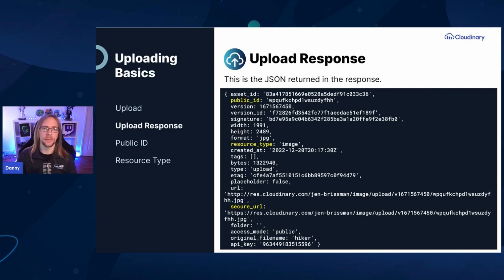There are a number of useful properties returned in the JSON response. You can see highlighted here we have the secure URL, which we just opened in our browser, but also the public ID and the resource type, which Stephen will talk about.